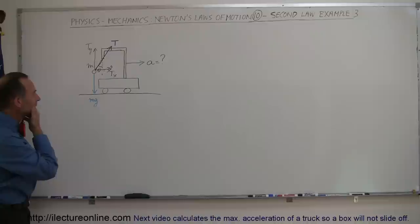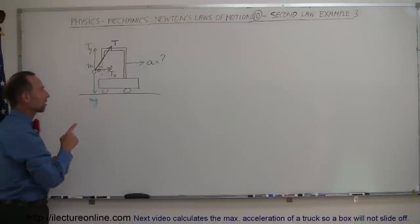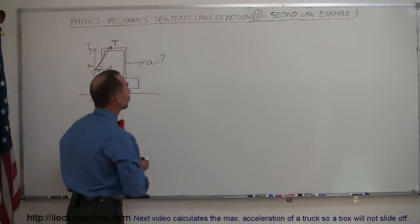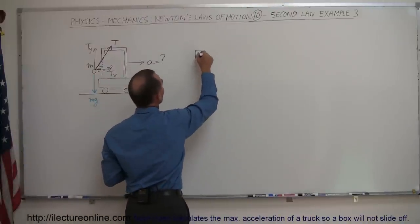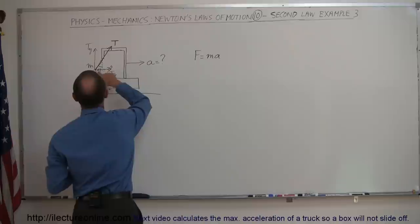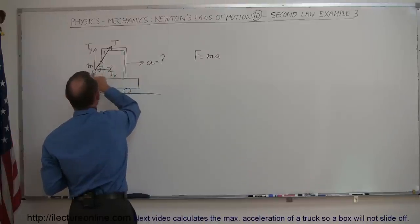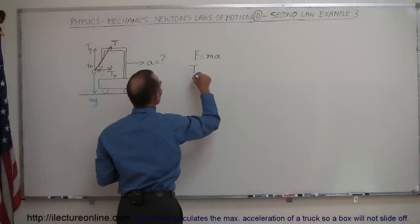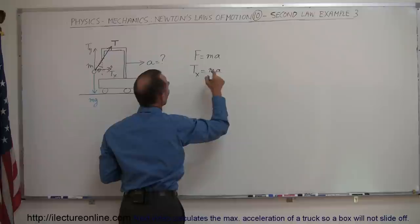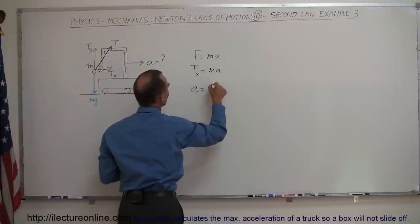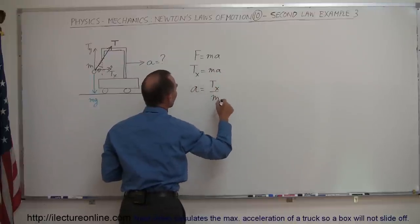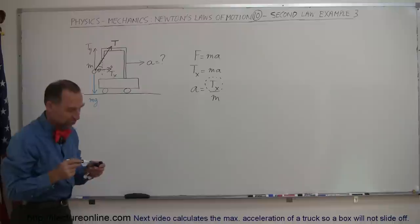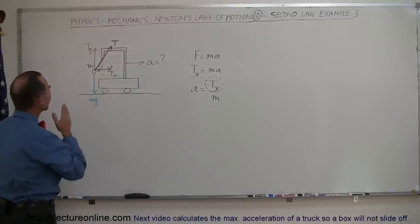To find the force in the X direction — and ultimately the acceleration of this cart — we use F equals MA. The net force acting on this little ball in the horizontal direction is T sub X. So T sub X equals MA, or solving for acceleration: A equals T sub X divided by M. The question now is: what is T sub X equal to, so we can find the acceleration?